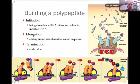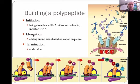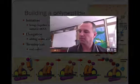Elongation is the actual making of the polypeptide, and termination is whenever you stop the code. Here we have the initiation, the elongation — which is number two — and then termination. I hope that helps you understand translation, and I will talk to you soon.